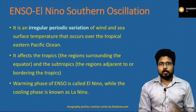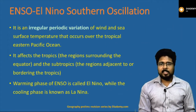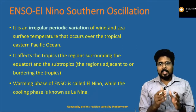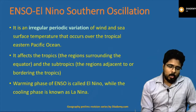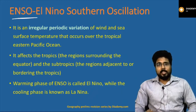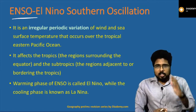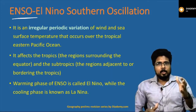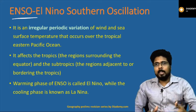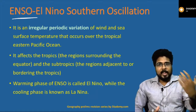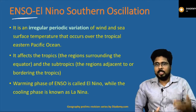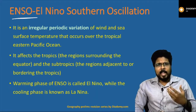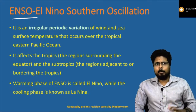El Niño has been in the news because of climate change. El Niño and La Niña together are known as ENSO — El Niño Southern Oscillation. The occurrence of El Niño and La Niña is cyclical: one year you will have El Niño, the next you will have La Niña. This cyclical variation is El Niño Southern Oscillation — an irregular periodic variation of wind and sea surface temperature occurring over the Eastern Pacific Ocean.